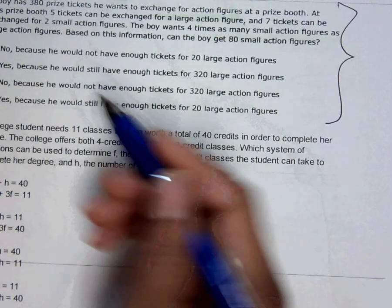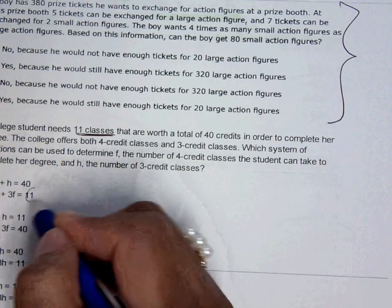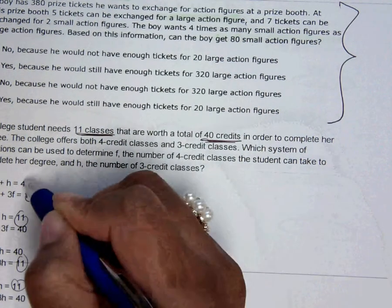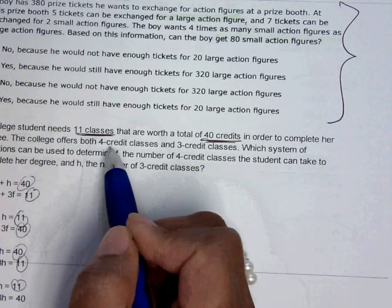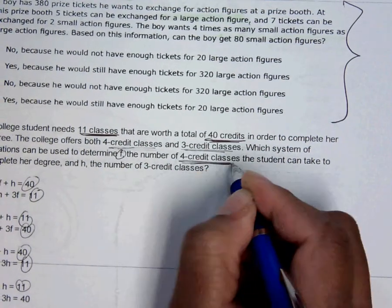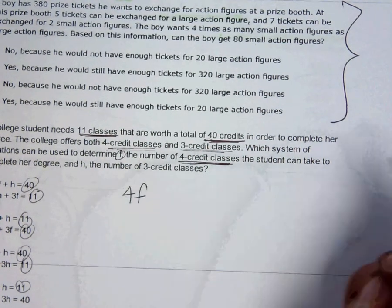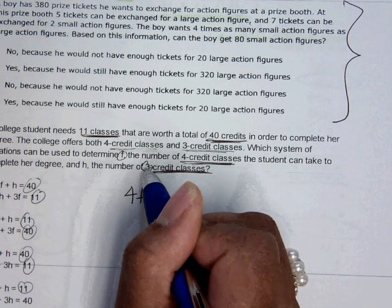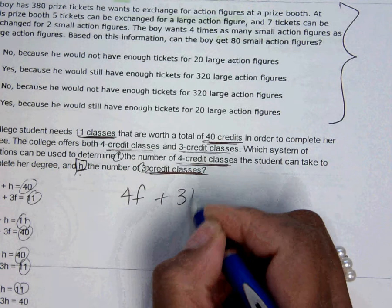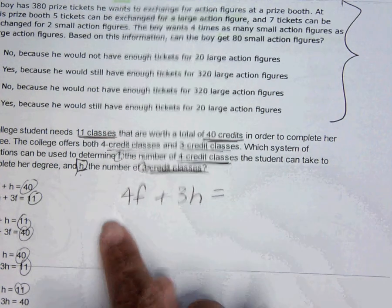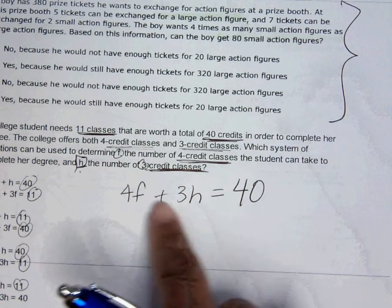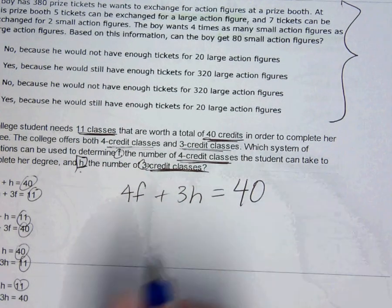On this one, I have a college student that needs 11 classes. Well, that's a total. And then I have a total of 40 credits. That's another total. Well, there are 4 credit classes and 3 credit classes. And F is the 4 credit classes, so 4F. 3 is the 3 credit classes, so 3H because it says H is the number of 3 credit classes. The question is, is the 4 and 3 going to go in the same spot as the 40 or the 11? Well, that's going to be 40 because this is talking about credits.